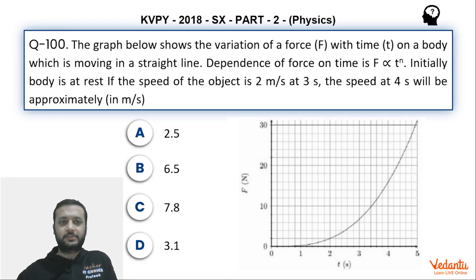Hi dear students. Let's see this question that came in KVPY 2018 SX part 2 physics paper. The question is very simple from the topic of linear motion or motion in one dimension. Basically I will quickly tell you the data what is happening over here. There is a particle which starts from rest and whose force versus time graph is given to us. The particle will move in a straight line.